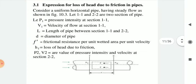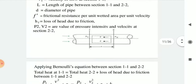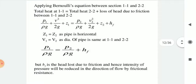Expression for loss of head due to friction in a pipe: consider a uniform horizontal pipe having steady flow. Let sections 1-1 and 2-2 be two cross-sections of the pipe, where P1 and V1 are the pressure and velocity at section 1-1, L is the length of pipe between sections 1-1 and 2-2, D is the diameter, f' is the frictional resistance per unit wetted area per unit velocity squared, Hf is the head loss due to friction, and P2, V2 are values at section 2-2. Applying Bernoulli's equation between sections 1-1 and 2-2: total head at 1-1 equals total head at 2-2 plus the loss of head due to friction.